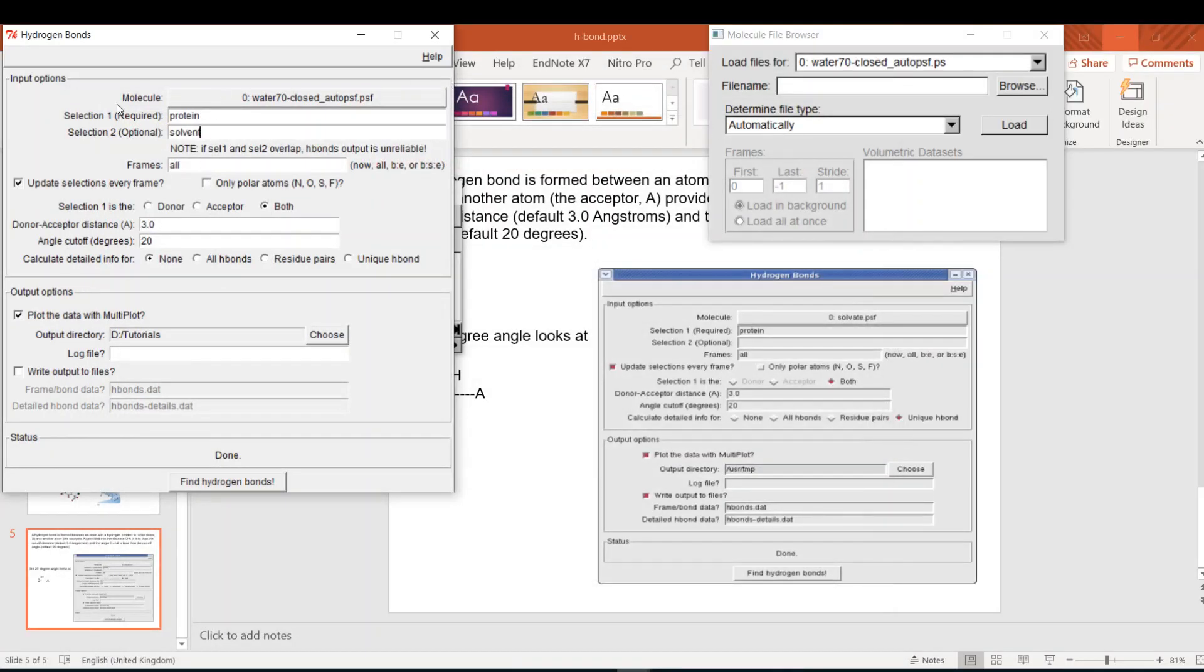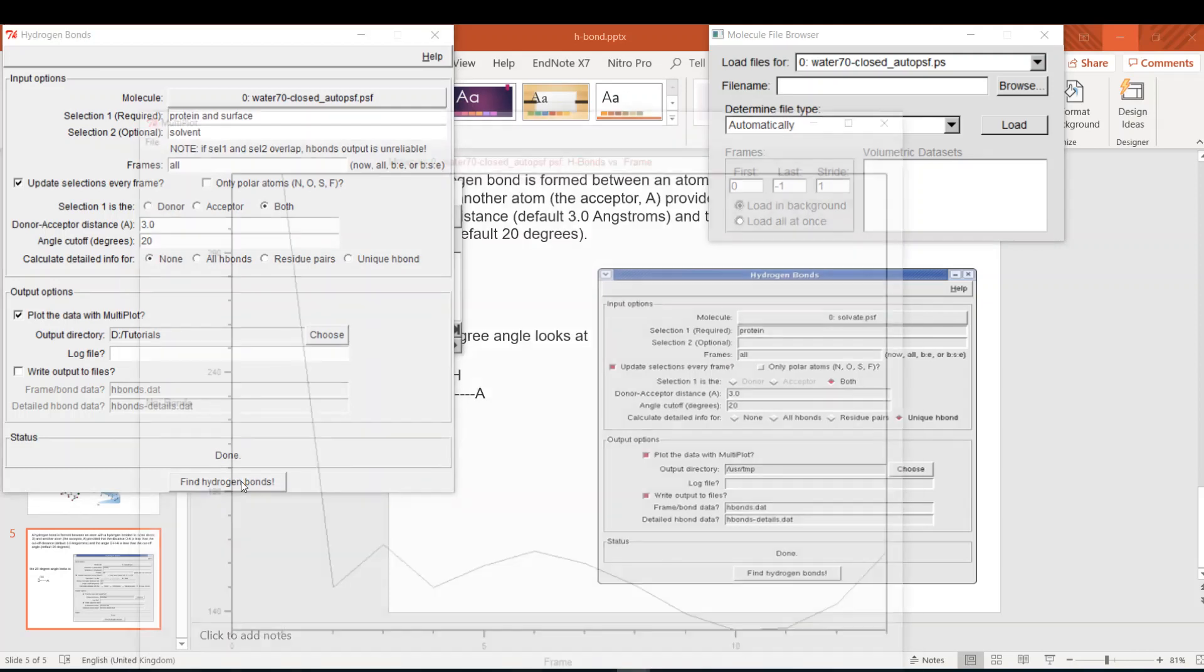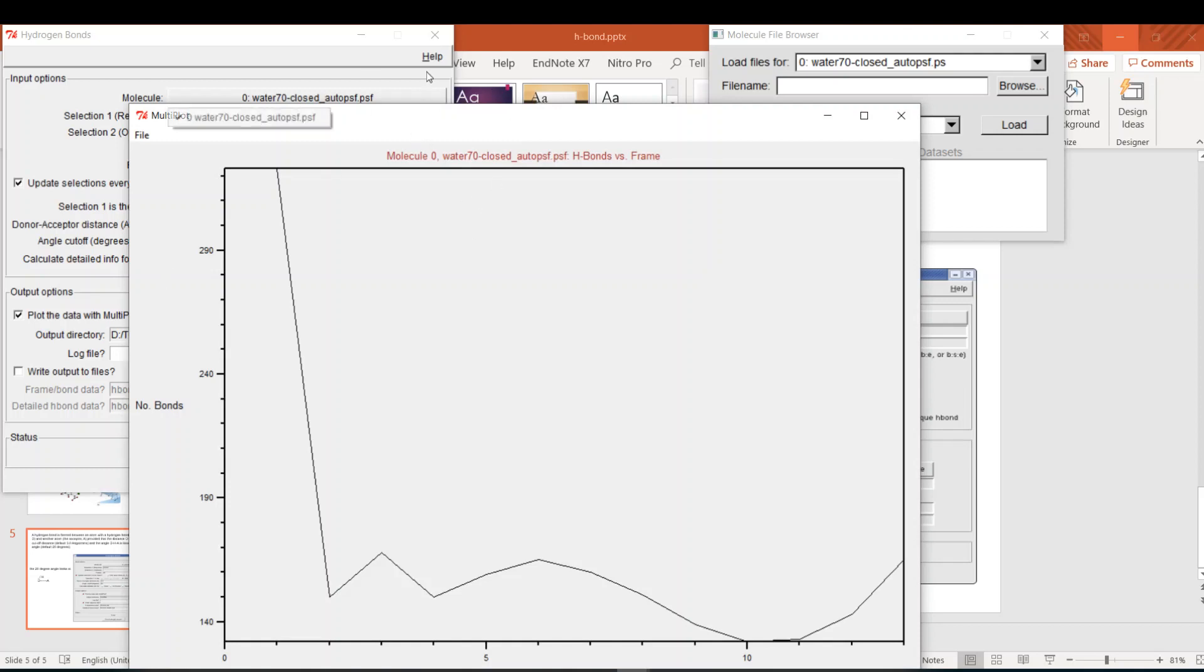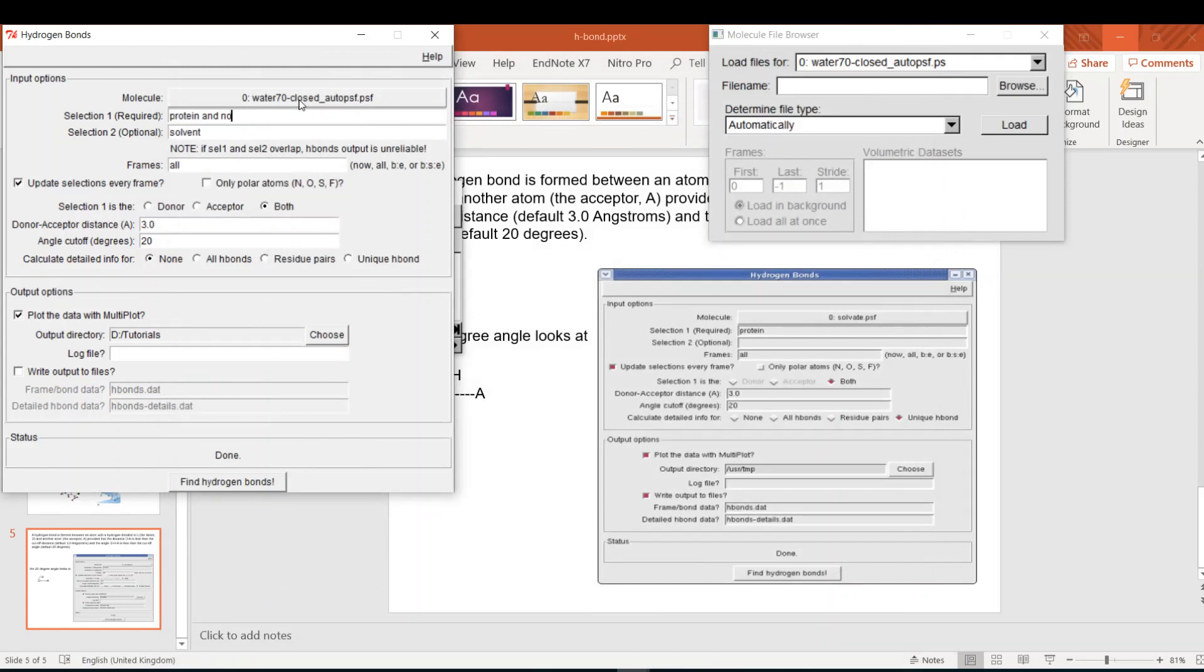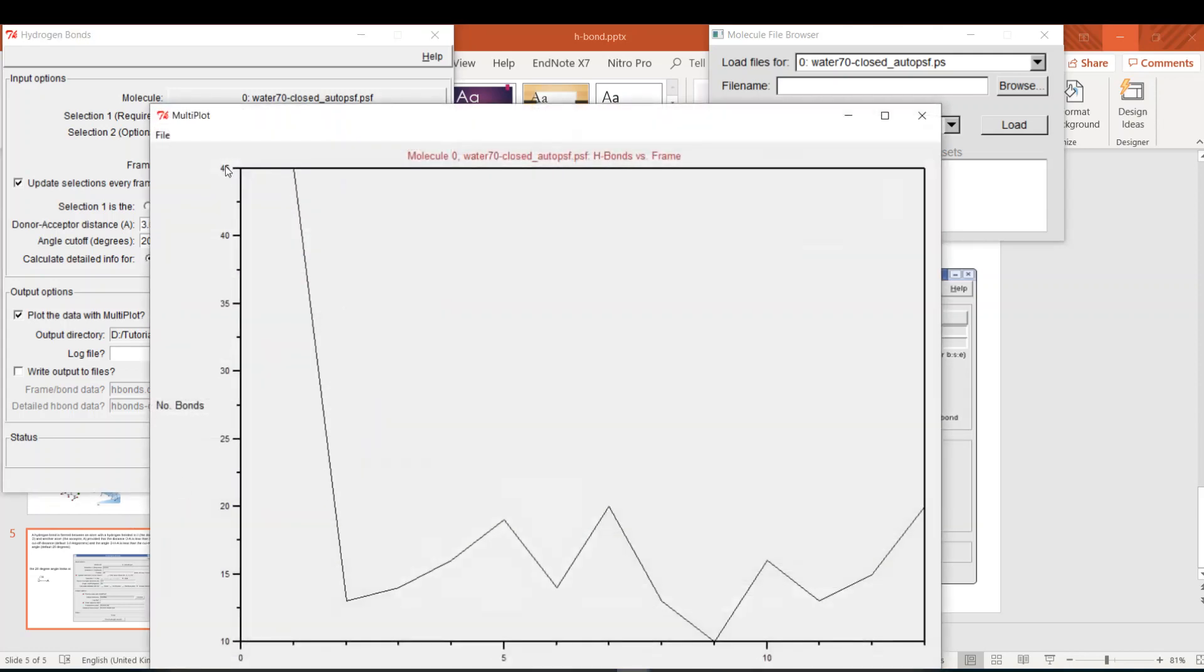Also you can use the cool selection language of VMD. You can say protein and surface, so this is the number of hydrogen bonds between the surface residues of the protein and the solvent. You can say protein and not surface, so this will be the core residues interaction with the solvent. And this will give you a lower number of hydrogen bonds. Yeah, 45, because these are the core residues which are not accessible to the solvent, so they have not many interactions.